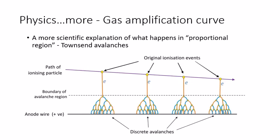Here is a more scientific explanation of what happens in the proportional region. Townsend avalanches start to happen in the proportional region.